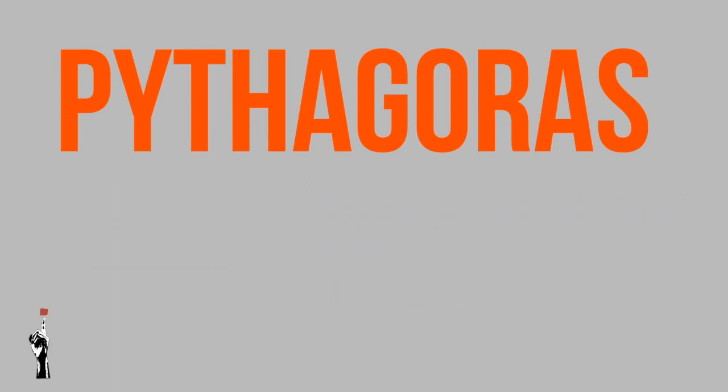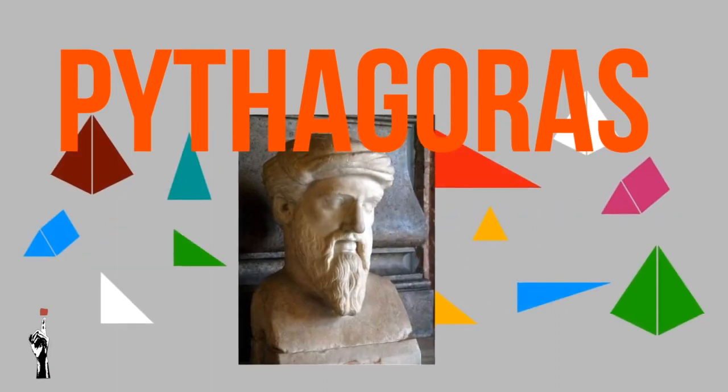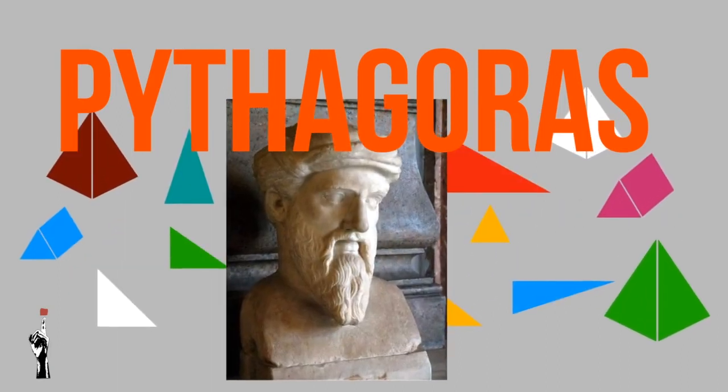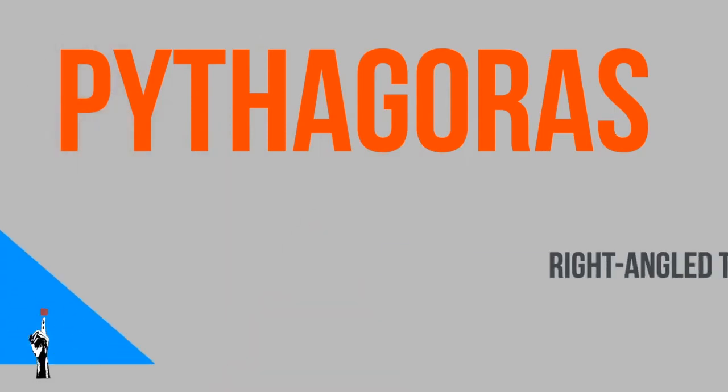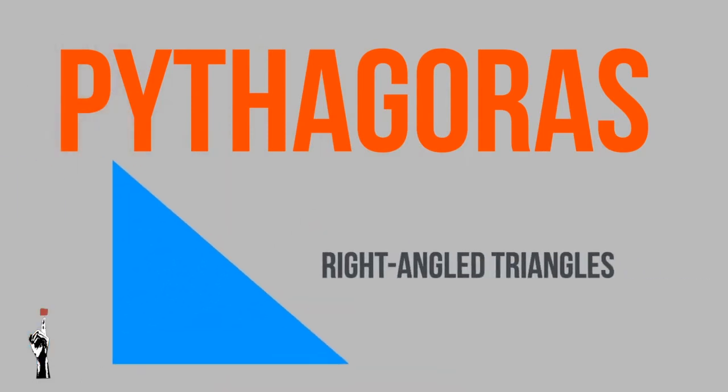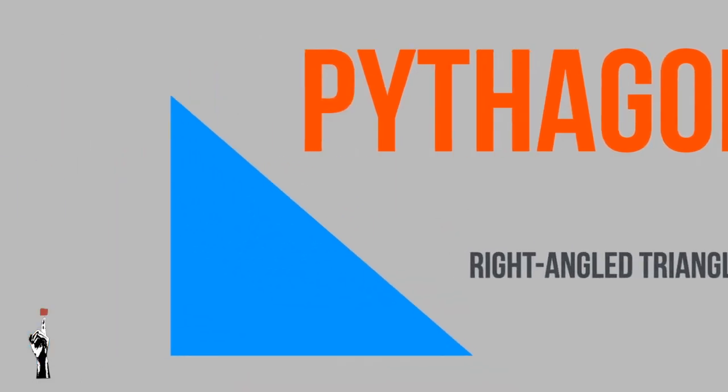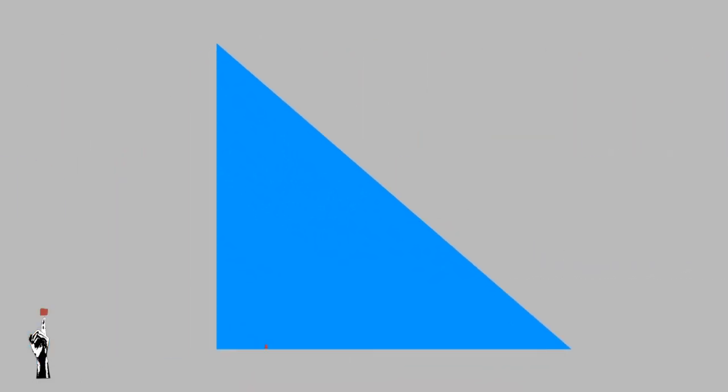Pythagoras was a man who was completely obsessed with triangles, specifically right-angled triangles — the triangles with a 90-degree angle.